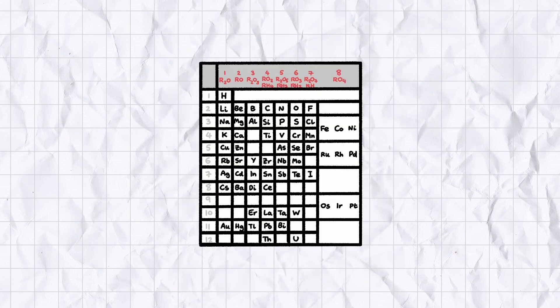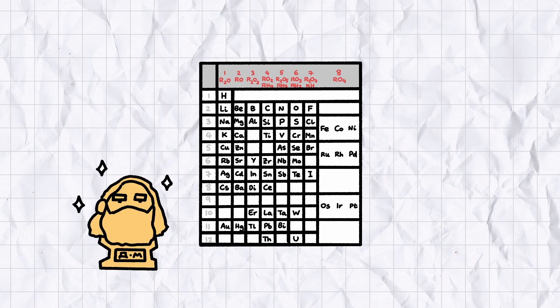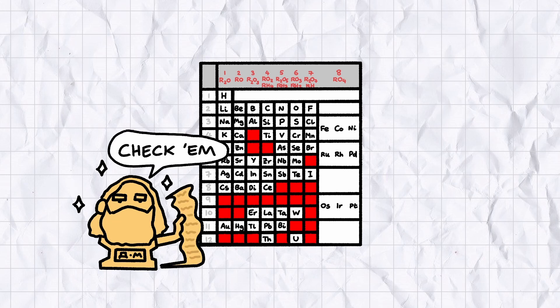But the brilliant feature of Mendeleev's table, the feature that would cement his legacy as one of the greatest chemists in human history, is that he left gaps for future elements that he believed had yet to be discovered, with detailed predictions of their atomic weights and physical properties.